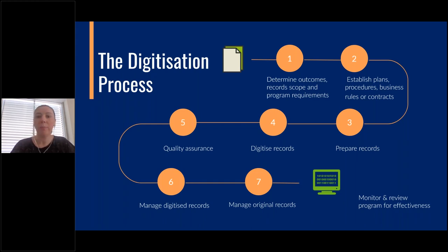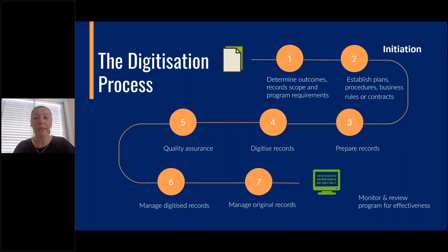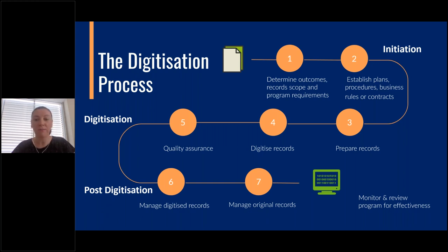The typical digitisation process looks like this. Firstly, there is an initiation phase where public officers should determine outcomes, scope records and set program requirements. From there they can establish policies, procedures, business rules, plans or contracts to govern digitisation programs. Secondly, there is a digitisation phase involving records preparation, imaging, metadata capture and quality assurance. Thirdly, a post-digitisation phase where public officers will need to manage both the physical and digital records following digitisation. It's also important to monitor and review the program throughout for program effectiveness. This webinar will focus on that initiation step.